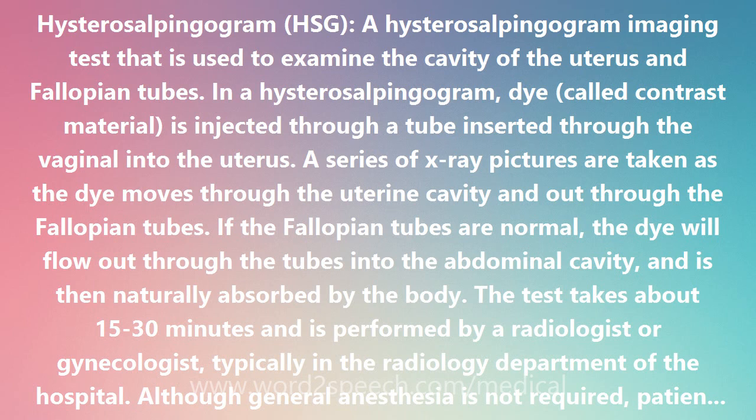If the fallopian tubes are normal, the dye will flow out through the tubes into the abdominal cavity and is then naturally absorbed by the body. The test takes about 15–30 minutes and is performed by a radiologist or gynecologist, typically in the radiology department of the hospital.